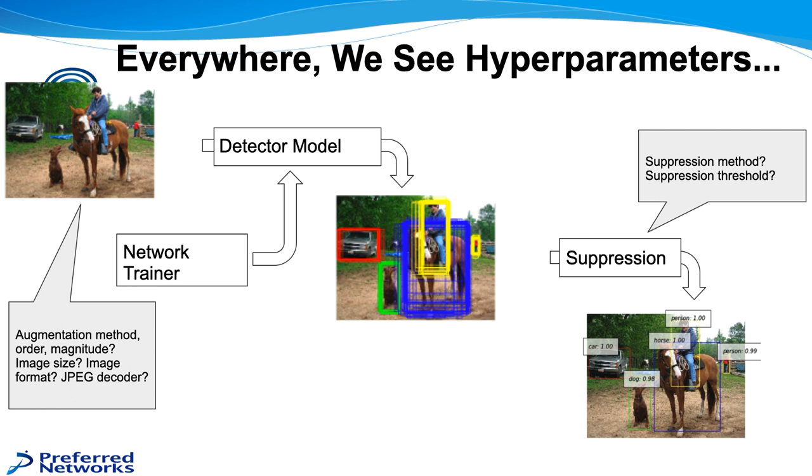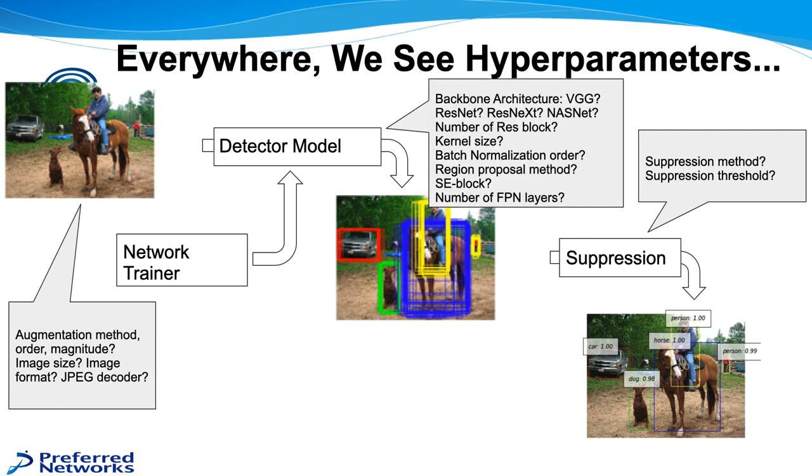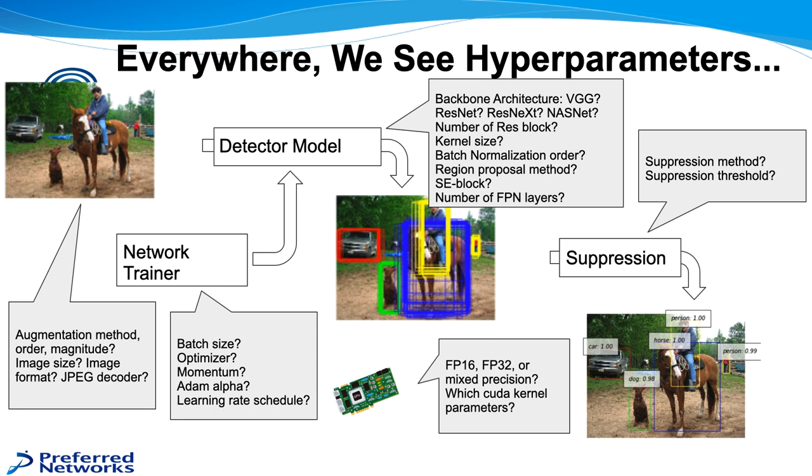What image size will you use, what image format, how you will use the JPEG decoder. Then within the detector model, you're going to use VGG, ResNet, ResNext, NasNet, the number of res box you're going to use, kernel size, batch normalization order, the number of FPN layers, etc. And then on the network trainer to train the network, you have the batch size, which optimizer you're going to use, whether it's SGD, Momentum, Adam Alpha, what you're going to have the learning rate be, or learning rate schedule. And then even if you go down to the hardware, which you might not think of, whether you're going to use FP16 or FP32 floating point precision, or mixed precision, or even the CUDA kernel parameters. So there's a huge number of things that have to be tuned.